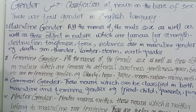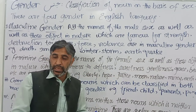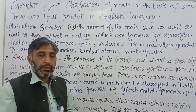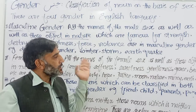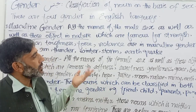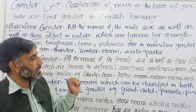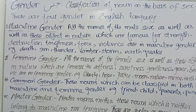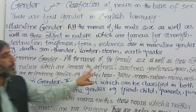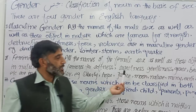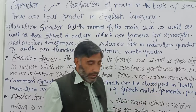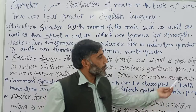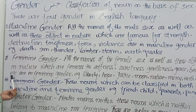Second is feminine gender — means muannas gender ya mother gender. Jaise girl, mother, sister, bitch, cow — jitne bhi female gender ke naam hain woh feminine gender mein aate hain. As well as, those objects in nature which are famous for softness, sweetness, gentleness, grace, beauty — woh bhi feminine gender mein istemal hoti hain.